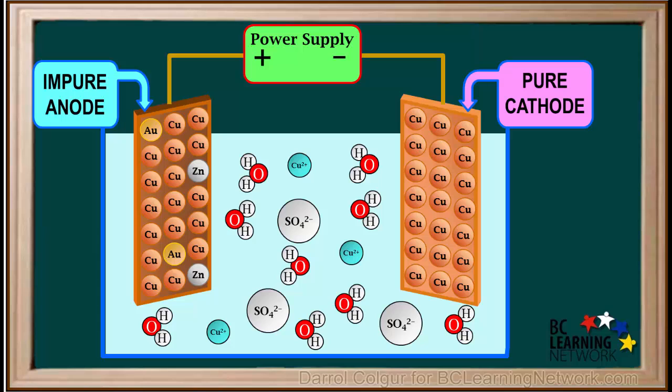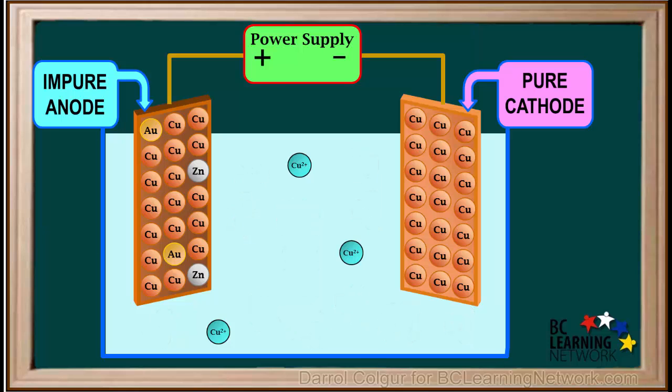We'll add some aqueous copper sulfate to this cell. If we're going to purify copper, we must have copper 2 plus cations in the electrolyte. Neither water nor sulfate ions will react in this cell, so we'll remove them from our diagram.